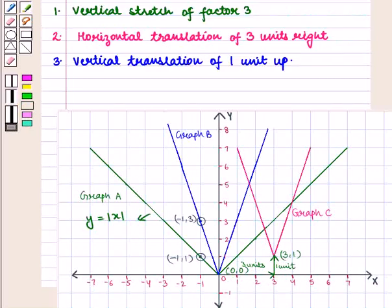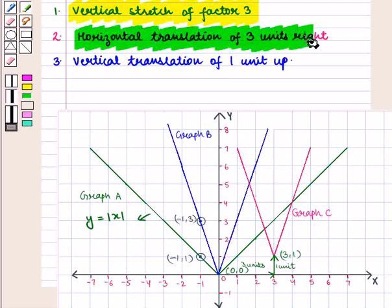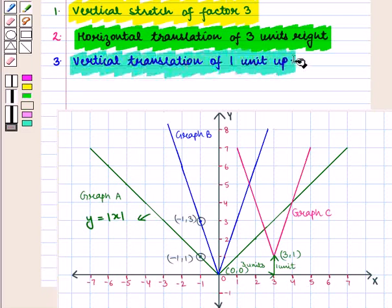Thus we have the following transformations from graph A to graph C: first, a vertical stretch of factor 3; then a horizontal translation of 3 units right and a vertical translation of 1 unit up.